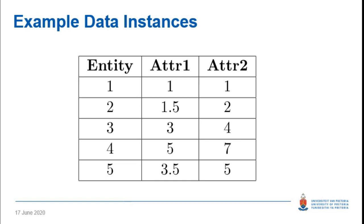Following the algorithm, the first step is to randomly choose k. In this case we randomly choose k to be two. We then randomly choose two centroids — one for each cluster. We choose entity two as the centroid for cluster one, and entity four as the centroid for cluster two. We now have to work out the Euclidean distance for the remaining entities — one, three, and five — from each centroid.